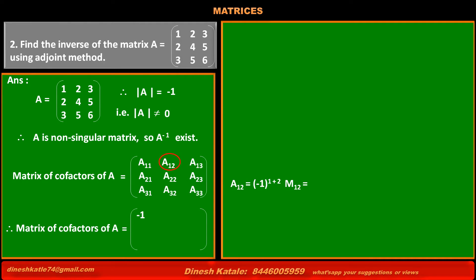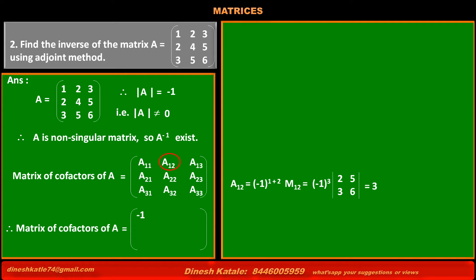Cofactor of element at first row, second column, A12 = (-1)^(1+2) × minor M12 = (-1)^3 × (2×6 - 3×5) = -1 × (12 - 15) = -1 × (-3) = +3. So the value of cofactor A12 is 3.